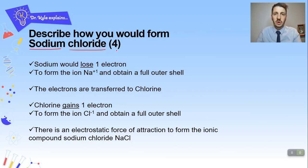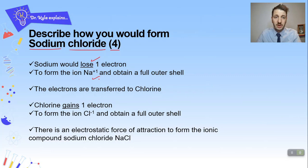These questions are often worth about four marks. The main marks come from: stating sodium would lose one electron (one mark), forming the Na⁺ ion (one mark), chlorine gains one electron (one mark), stating which ions are forming (one mark). We always finish with 'electrostatic force of attraction' just in case we've missed something in the mark scheme.